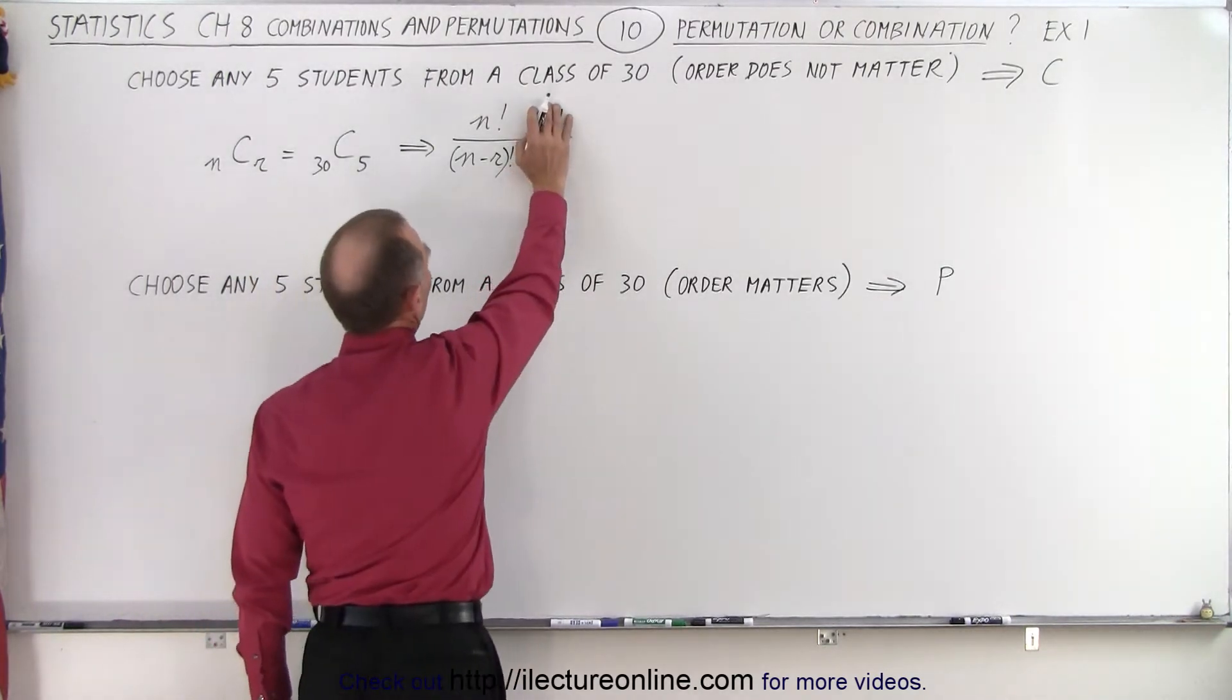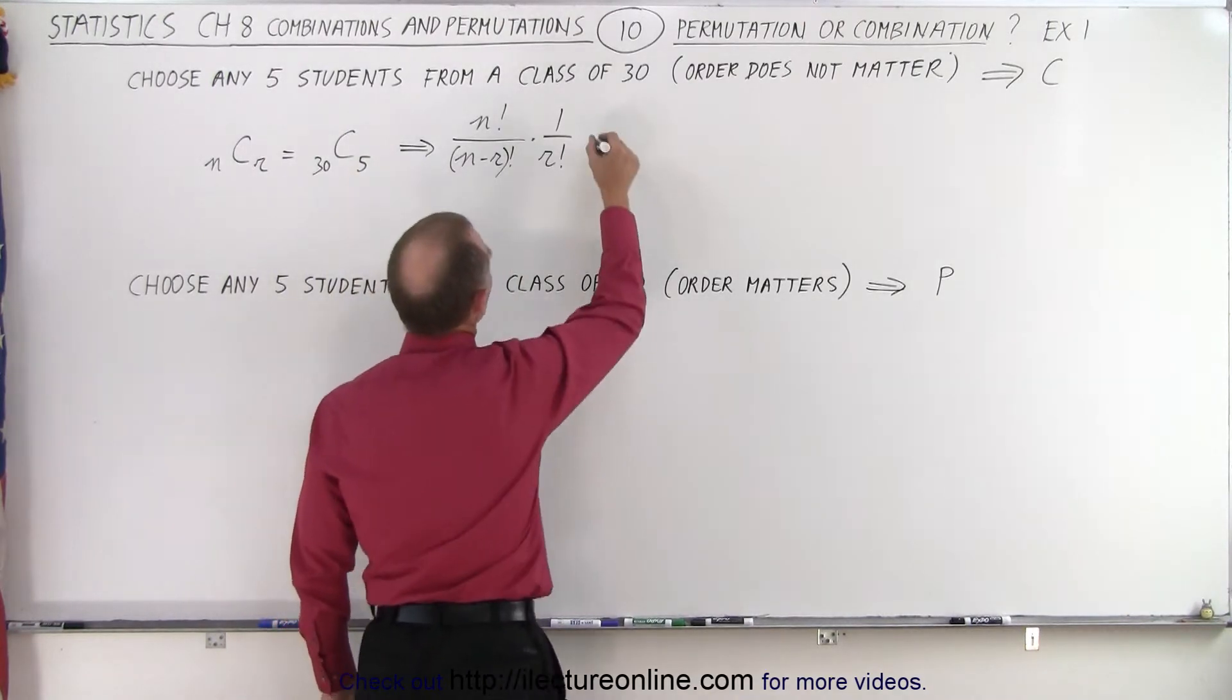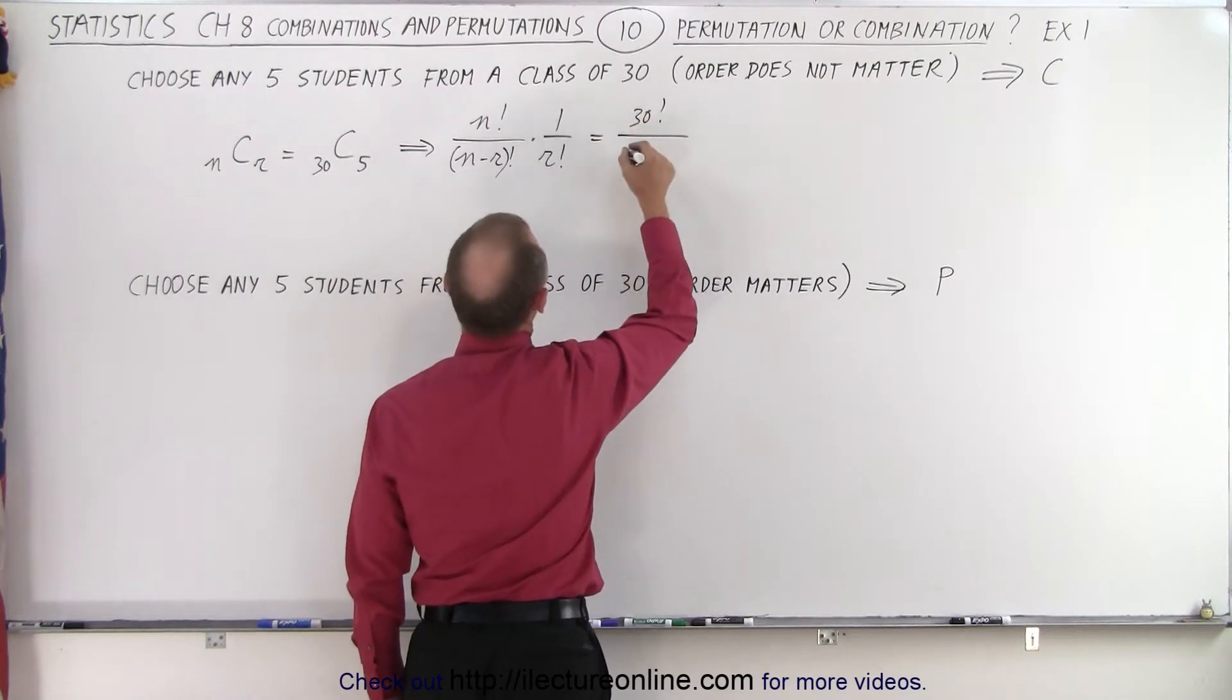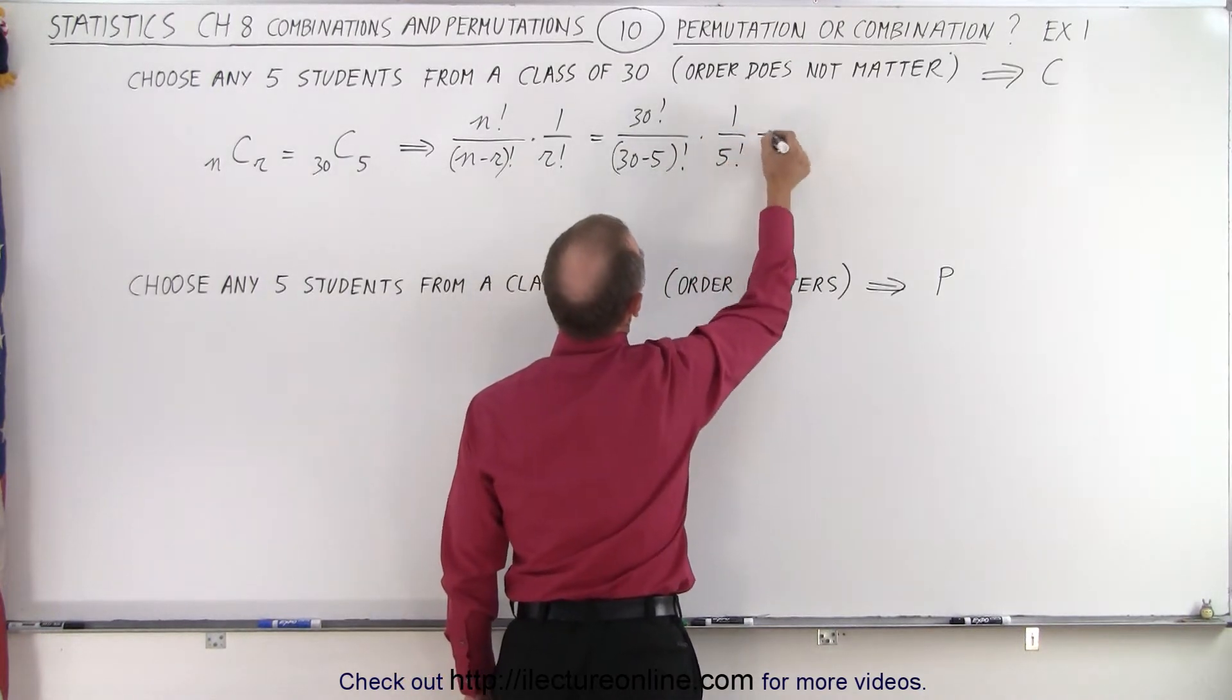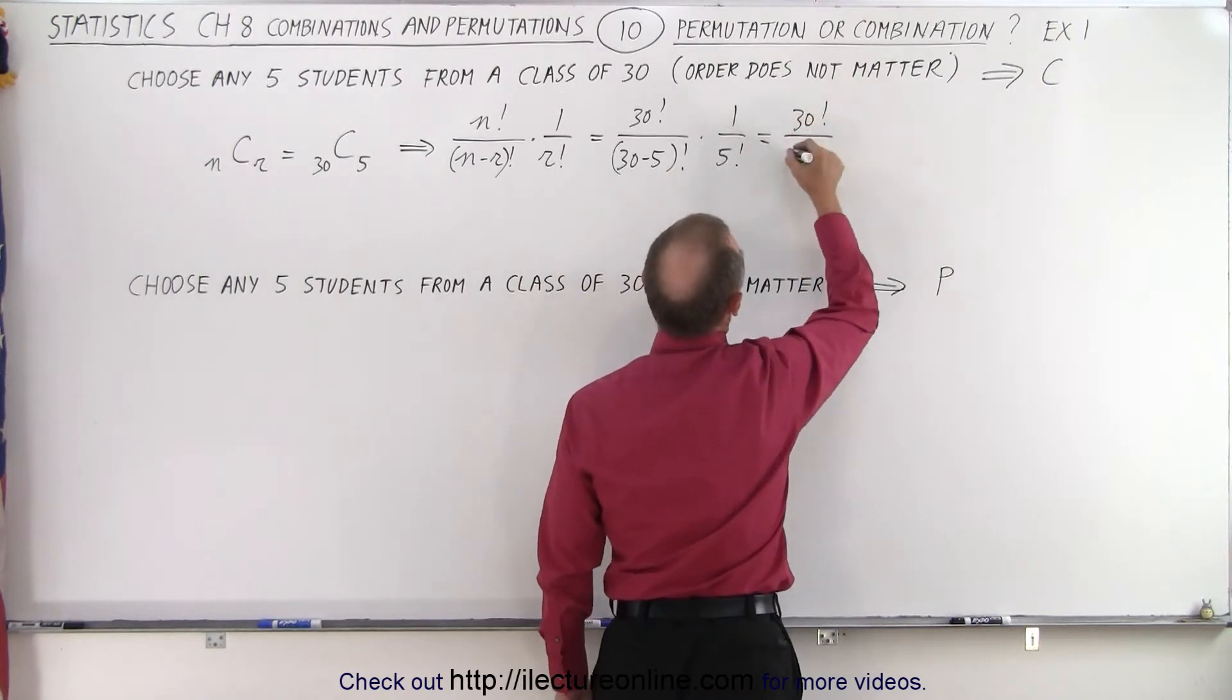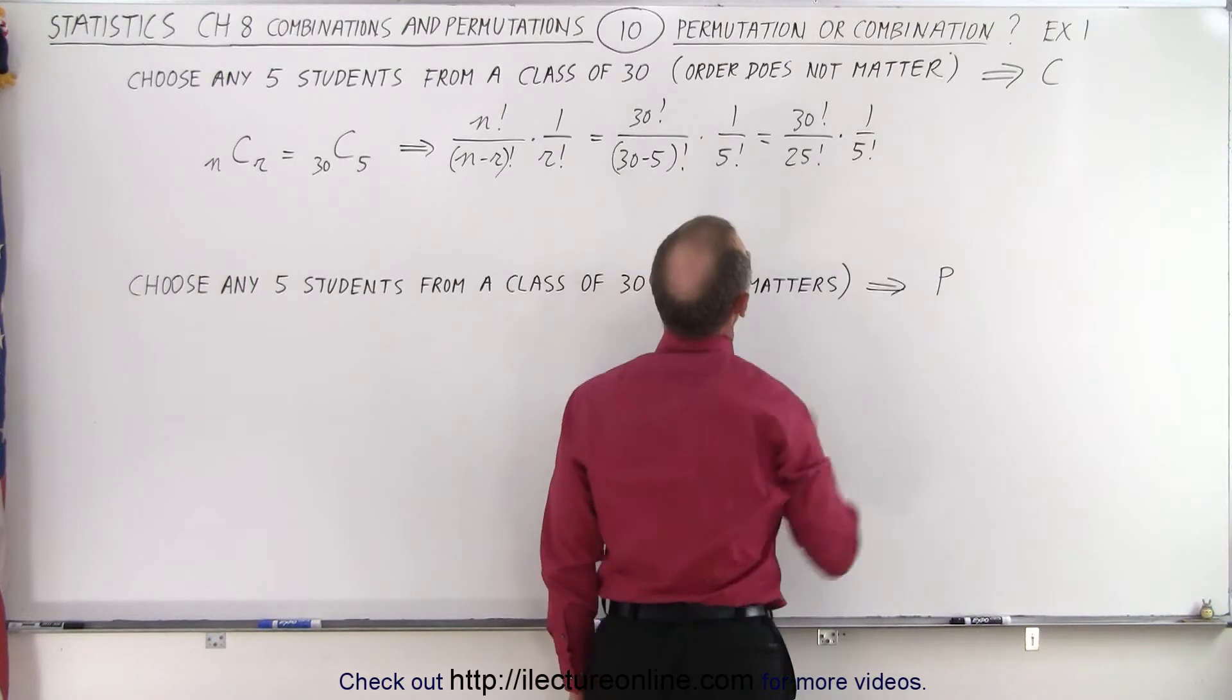This is what sets the difference between combinations and permutations. Without this, you'd have the number of permutations. With it, you have the number of combinations. So in this case, that's going to be equal to 30 factorial divided by 30 minus 5 factorial times one over 5 factorial. So in this case, that would be the same as 30 factorial divided by 25 factorial times one over 5 factorial.